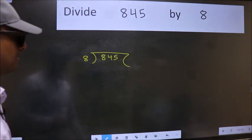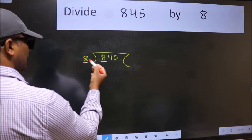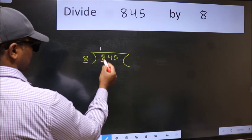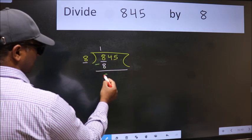Next, here we have 8 and here 8. When do we get 8 in the 8 table? 8 once 8. Now we should subtract. We get 0.